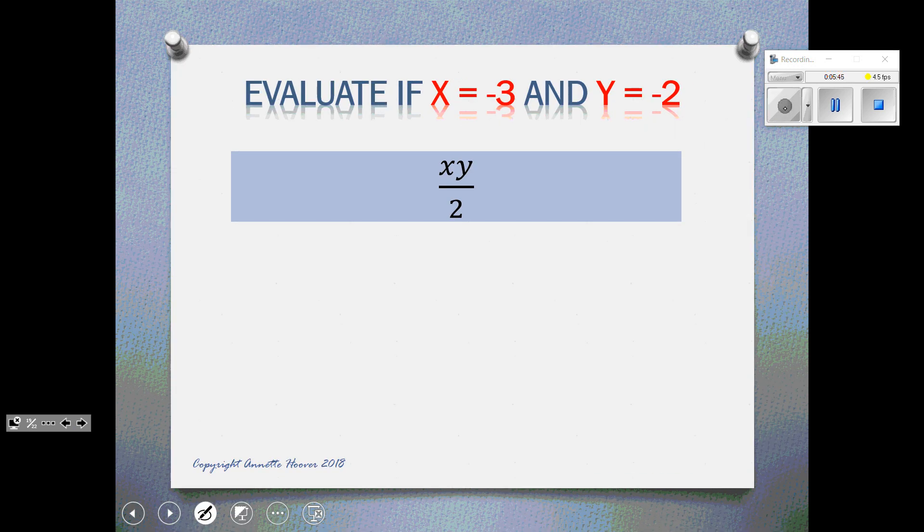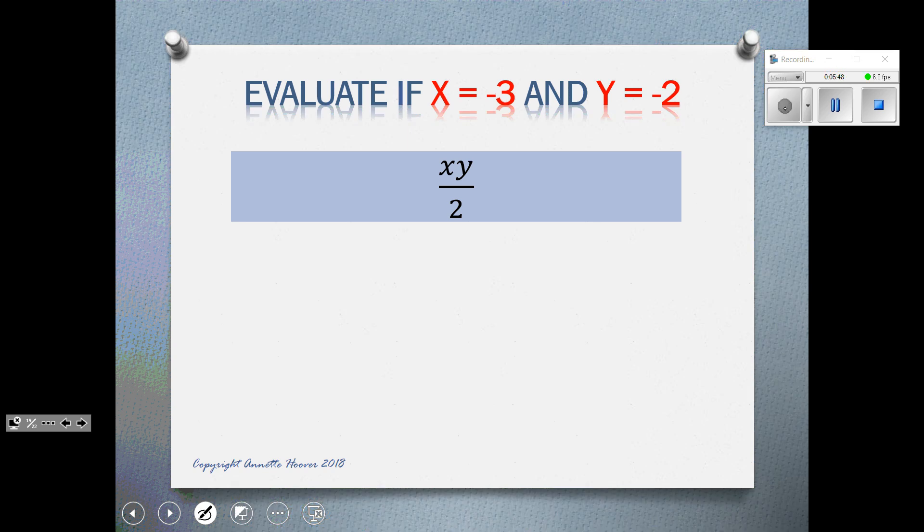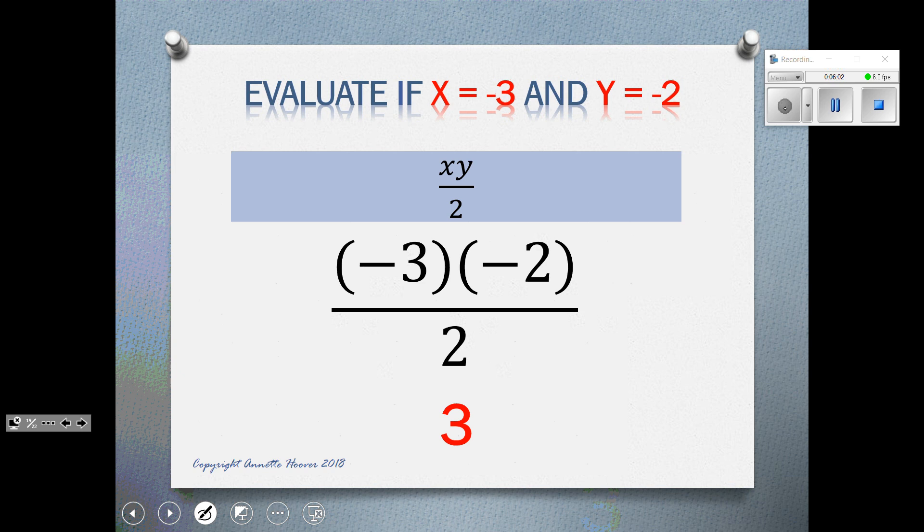This is where we're going to plug in numbers. So x is negative 3, so in the numerator we have negative 3 times negative 2. When multiplying two negatives, we know that we are going to get a positive 6. Two negatives make a positive. So that would give us 6 divided by 2, which is 3.